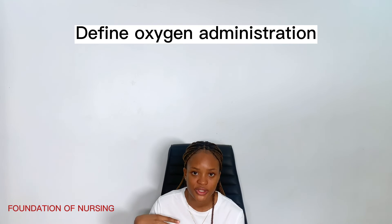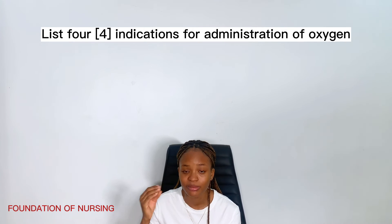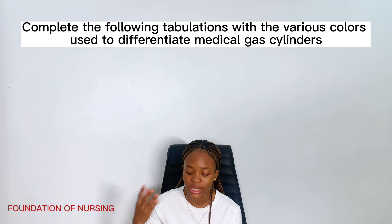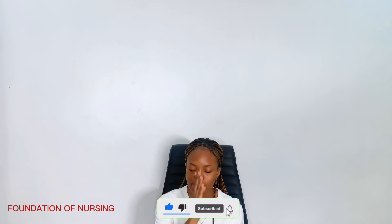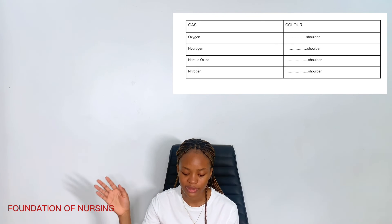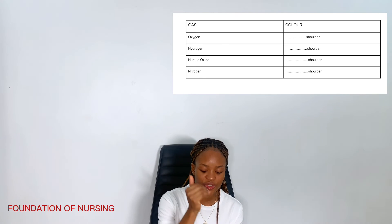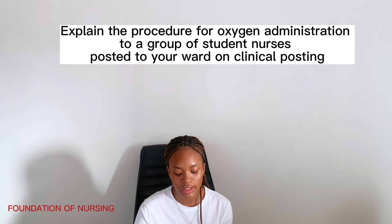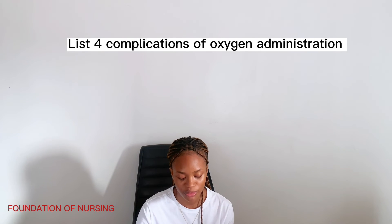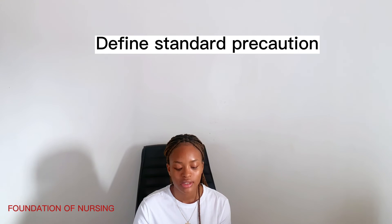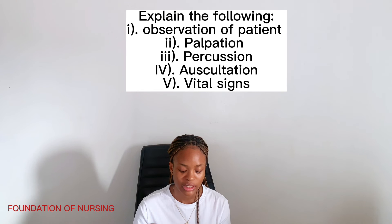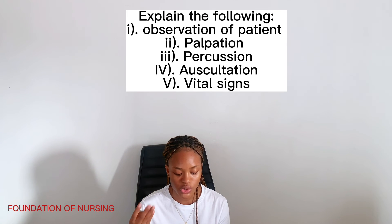Question 3: define oxygen administration. B: list 4 indications for administration of oxygen. C: complete the following tabulations with the various colors used to differentiate medical gas cylinders — oxygen, hydrogen, nitrous oxide, and nitrogen — what color cylinder corresponds to each? Question 3D: explain the procedure for oxygen administration to a group of student nurses sent to your ward on clinical posting. List 4 complications of oxygen administration. Question 4A: define standard precaution. 4B: explain briefly any two primary goals of standard precaution. 4C: explain the following observations of patients — palpation, percussion, auscultation, and inspection.